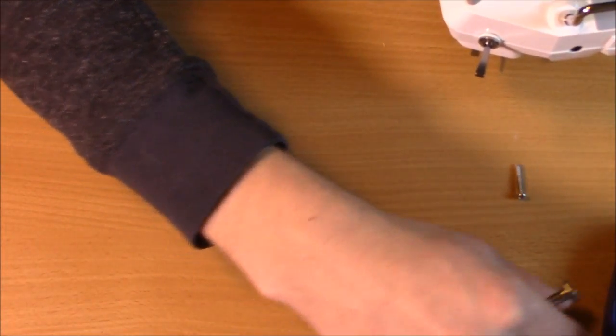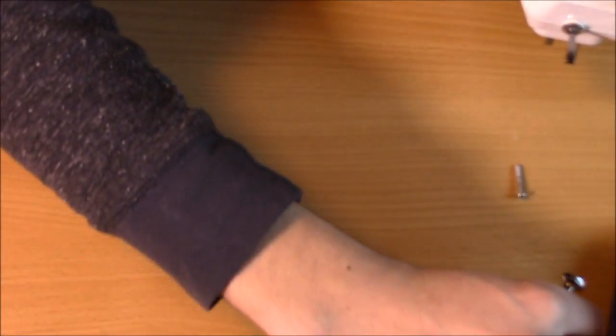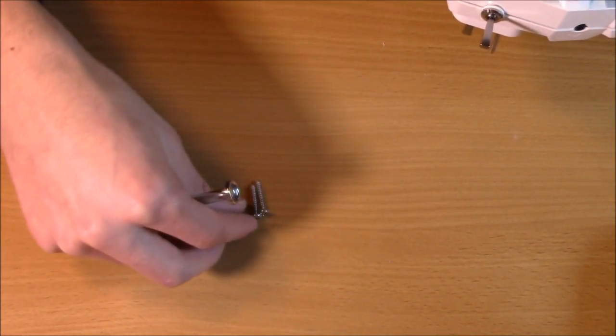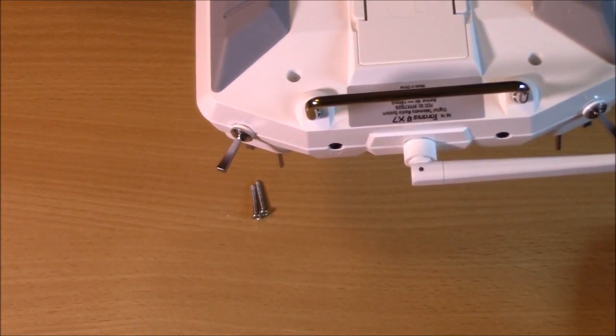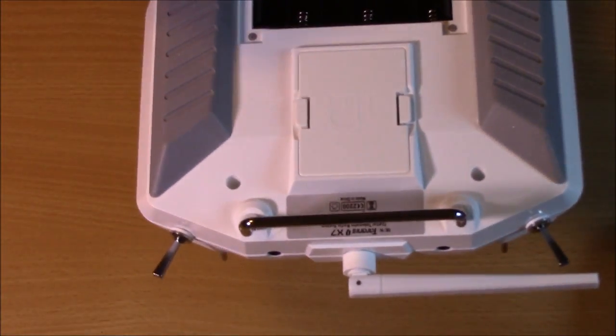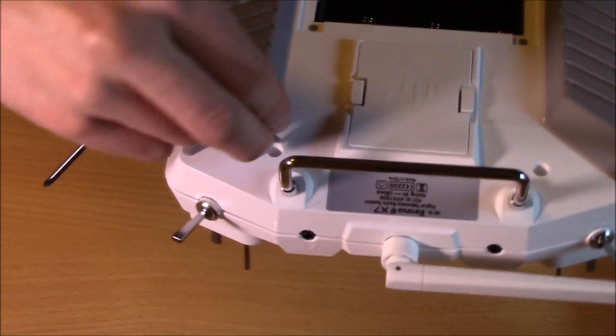Now, the screws all appear to be the same size, so that's good. So if they do fall out, you can use all of them in the same hole. So all you're going to do then is just put these babies back in and screw them back in, and then you are now good to go for manual throttle.